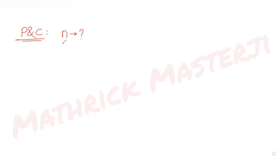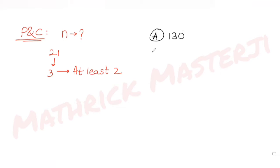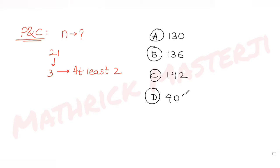Today's question is from the topic of permutations and combinations. The question asks: in how many ways can 21 identical apples be distributed among three children such that each child gets at least two apples? The answer choices are 130, 136, 142, and 406.